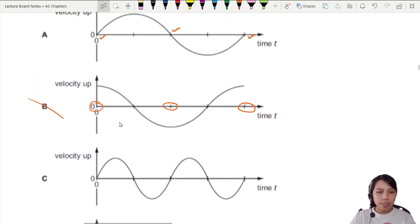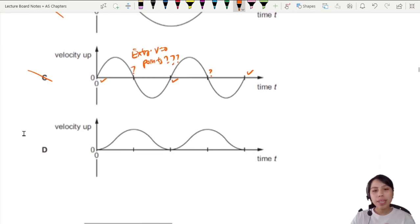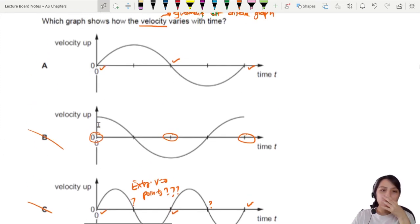This one, C. It got zero points here, here, and here. But why are there extra zero points here? This is extra V zero points? Question mark. Something's not quite right. Last graph. Zero, zero, zero. Possible. Leave A and D. I think we need more information.